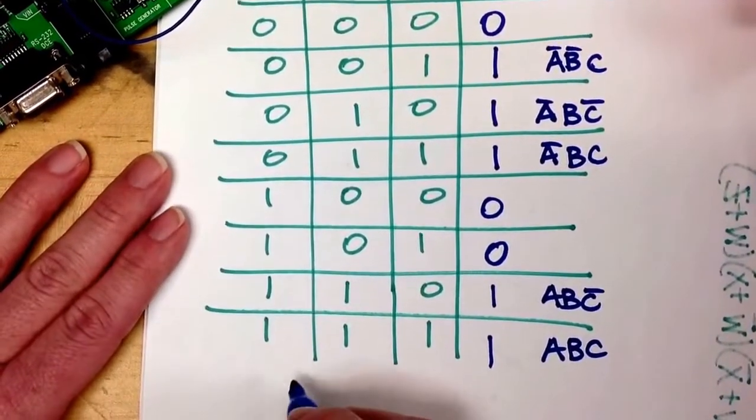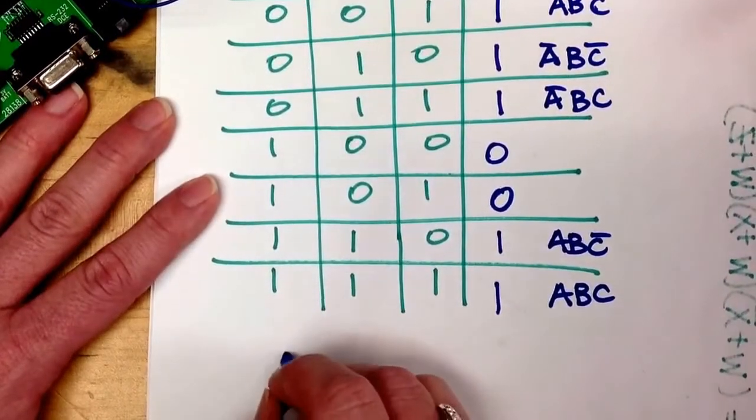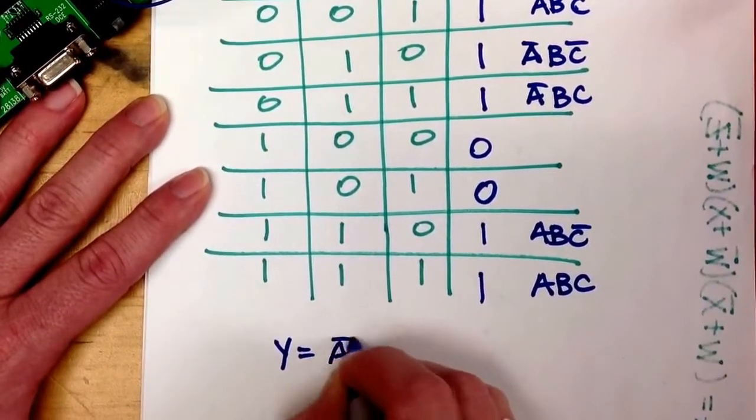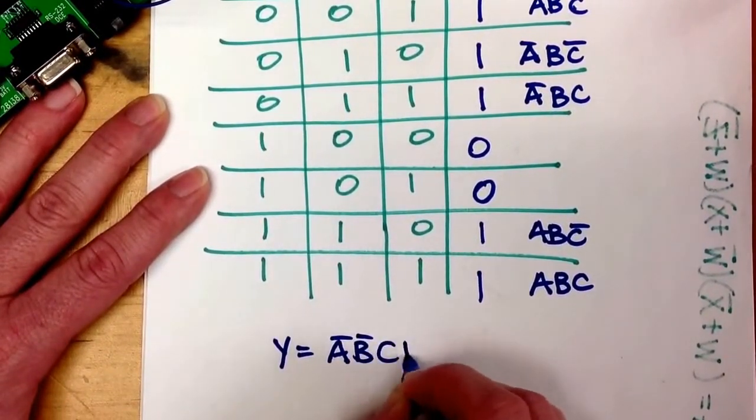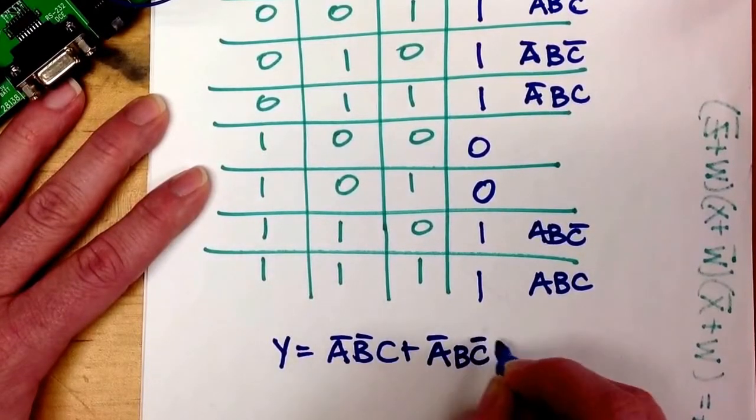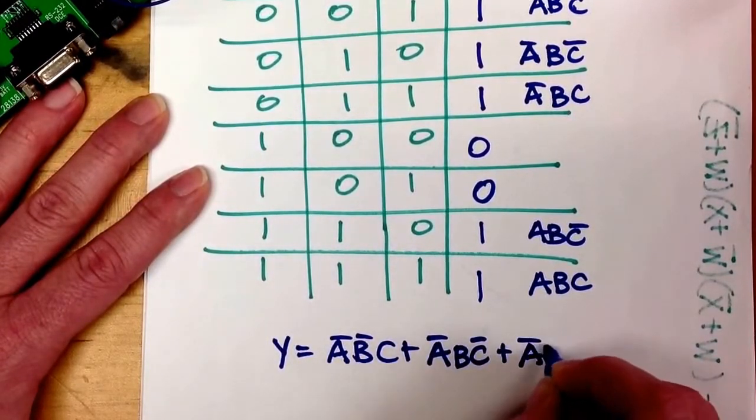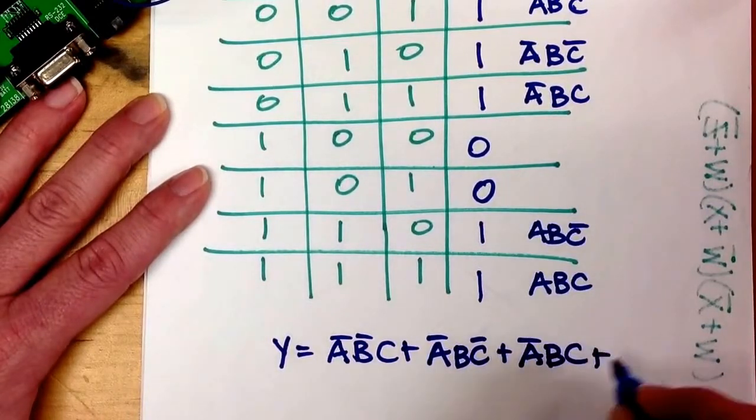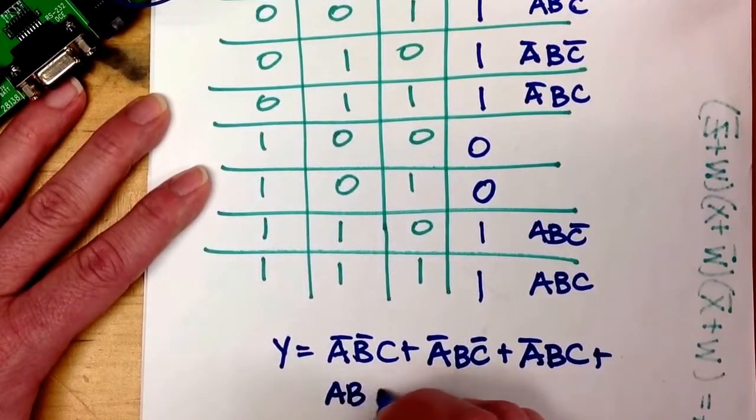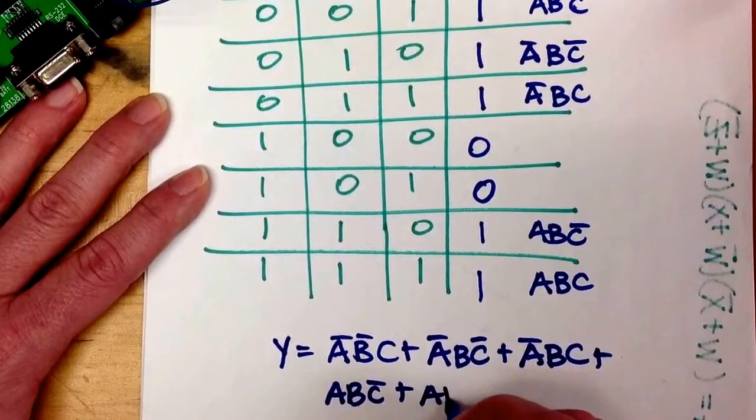So we would write that as Y equals not A, not B, C, or not A and B and not C, or not A and B and C, or A, B, not C, or A, B, C.